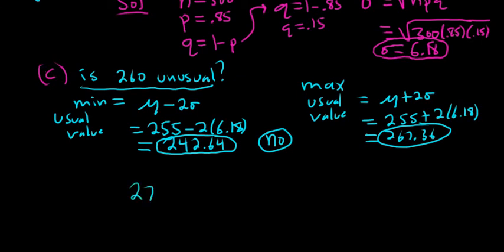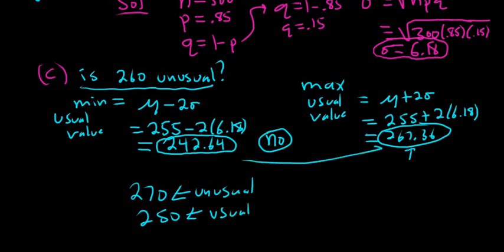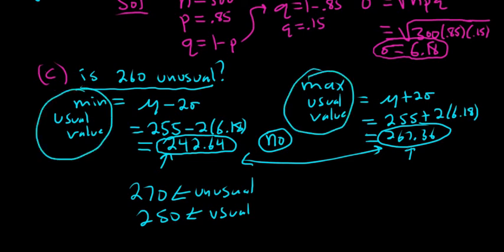So for example, 270, well this one's bigger than 267 so this would be unusual. 250, that one's okay, that one's between these numbers, between 242.64 and 267.36. This one is usual. So anything between these numbers is usual. 255 is usual, that's actually the mean. 261 is usual. 220 is unusual because it's below this. So to figure out whether things are unusual or usual, you just work out the minimum usual value and the maximum usual value. Anything between these numbers is usual, and if it's not between, it is unusual. That's it.